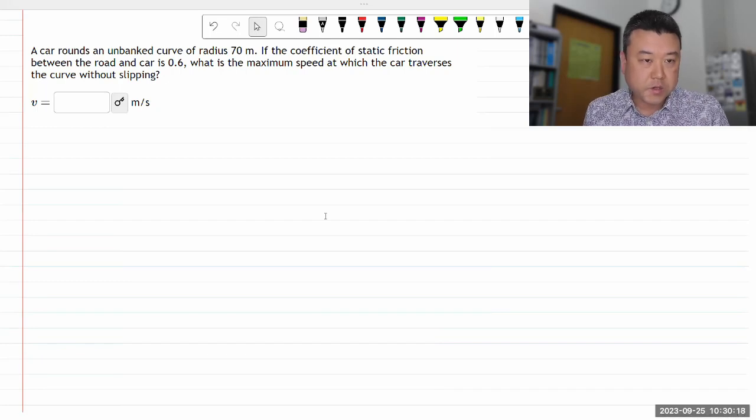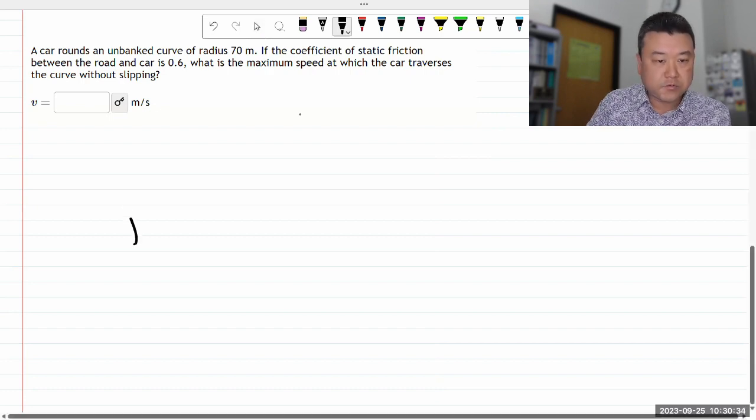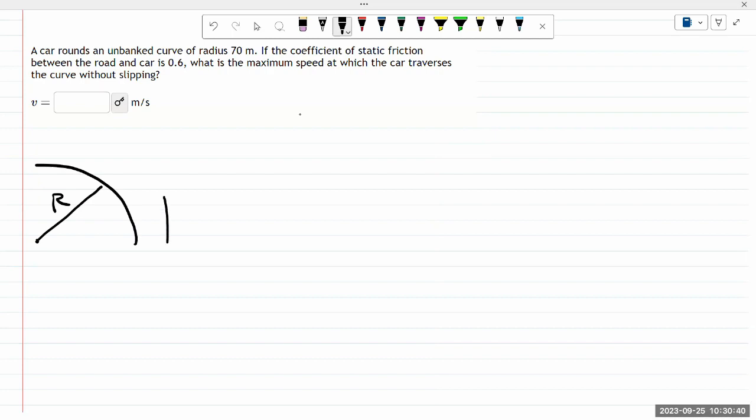Okay, so let me read this question and then get started. It says a car rounds on a big curve. Let me just do a little bit of doodling. It helps me make sure that I understood all the information in the question. So there's a curve of some radius. So let me draw the curve of some radius. And it says a car is rounding that curve. So there's a car there somehow.